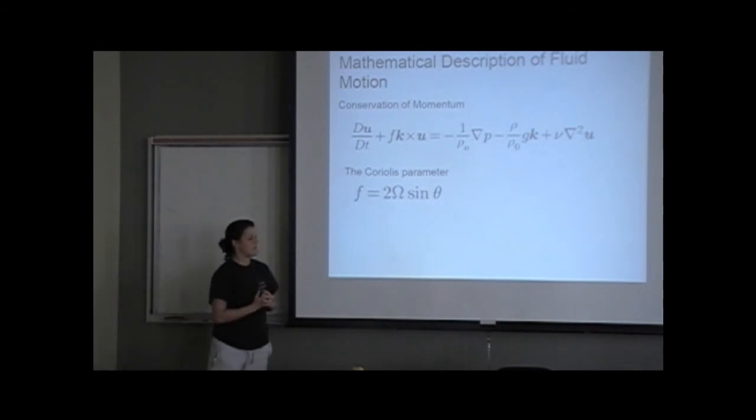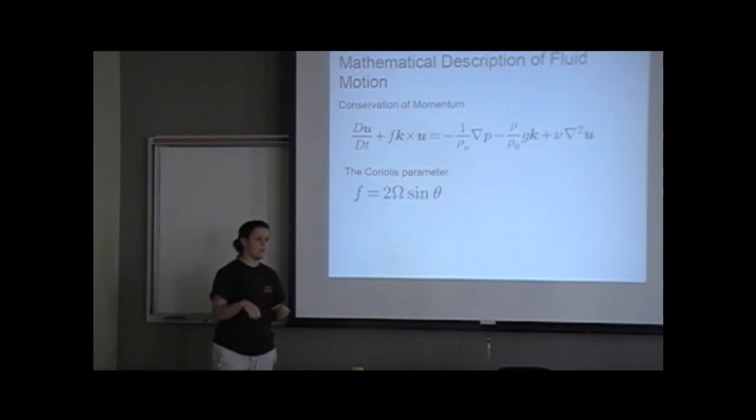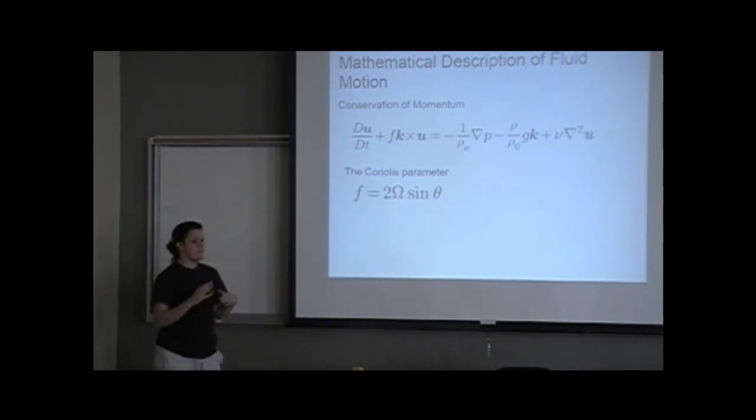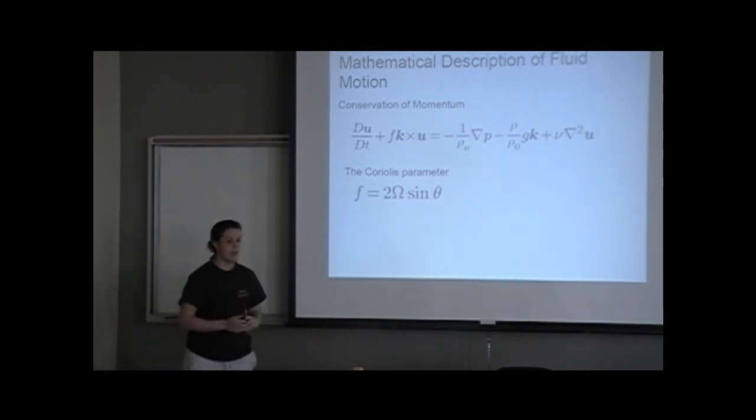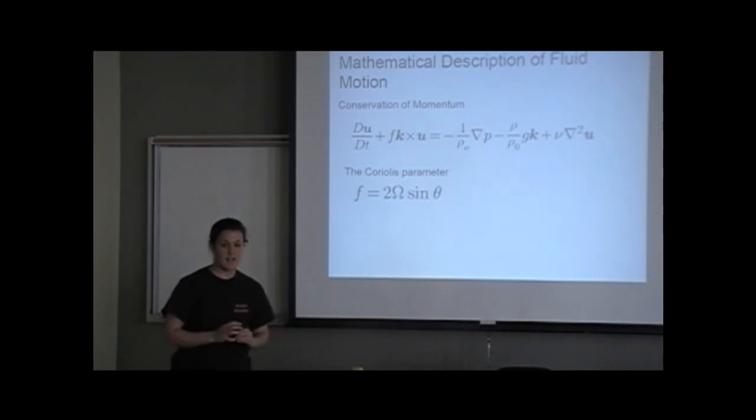And the Coriolis parameter is represented by f here, and that is two times the rotation rate of the Earth times sine of latitude. So because again, the rate of rotation of the Earth is different at different latitudes, the Coriolis parameter takes different values. And is the k vector straight up from the surface? Yeah, k is point out of the surface. So at the pole it points straight up, and then it's in line with the gravity vector.